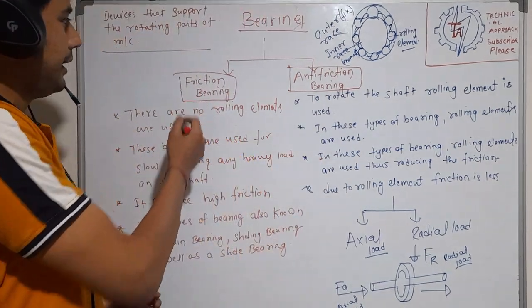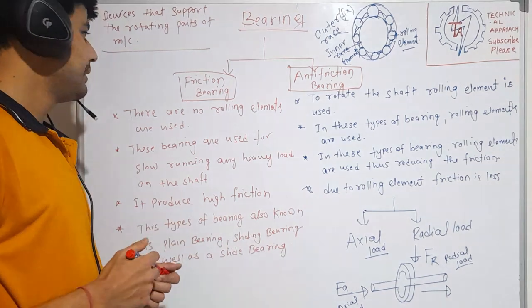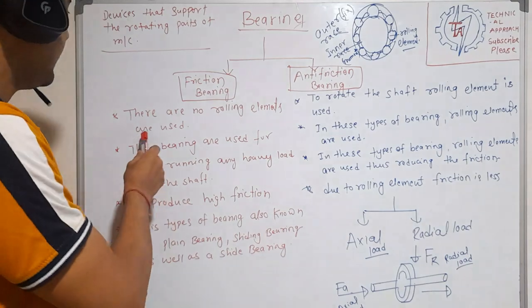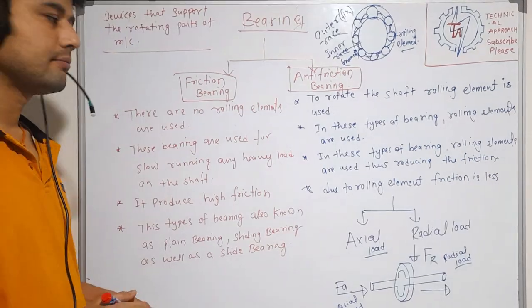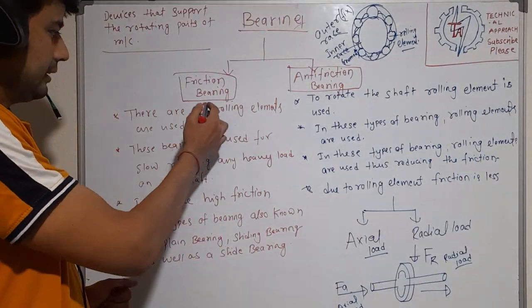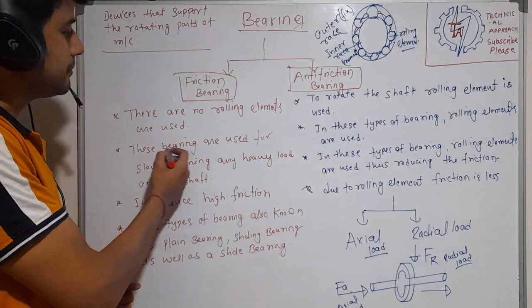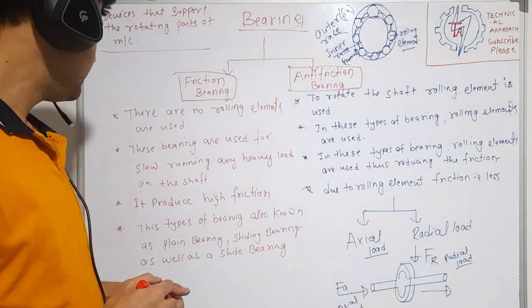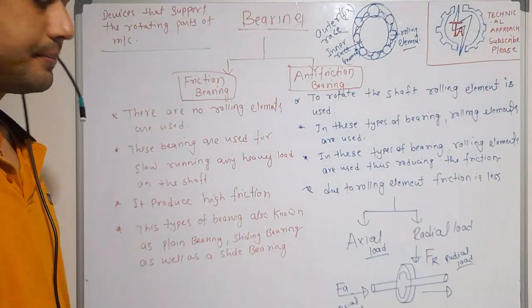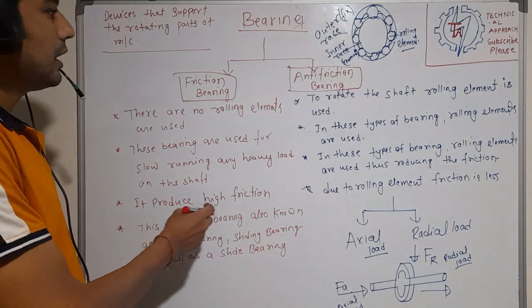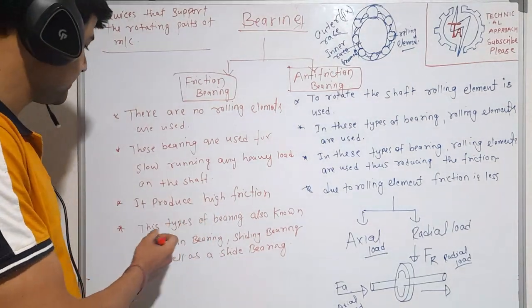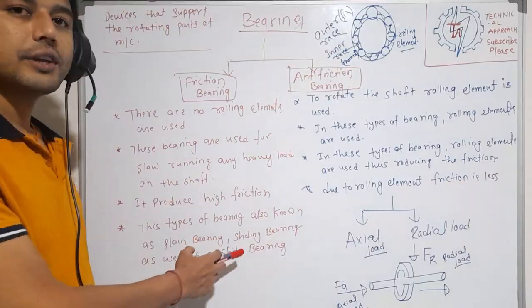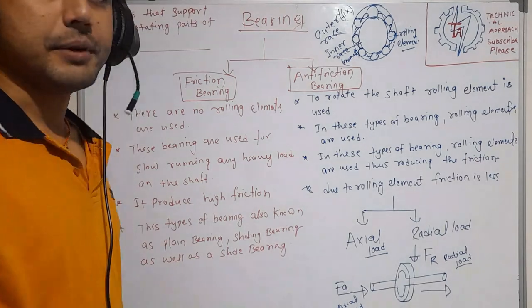In friction bearing, no rolling elements are used. This type of bearing is used for slow running with heavy load on the shaft. It produces high friction. This type of bearing is also known as plain bearing, sliding bearing, or slide bearing.